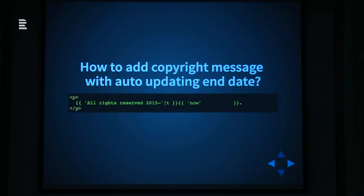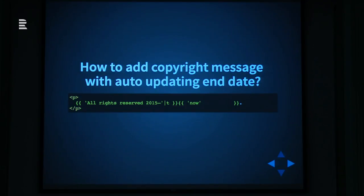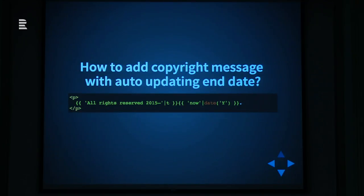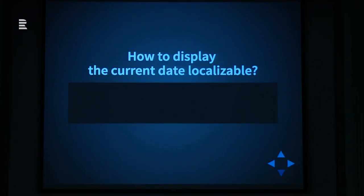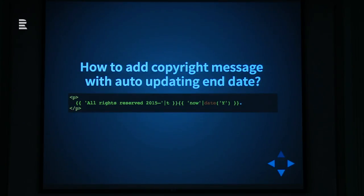So it should be auto-updated. First step: we use the 'now' keyword, which is understood by the strtotime() function of PHP. 'Now' means for PHP the current date and time. To be able to use it, we add another filter - the date filter - and we use the PHP date syntax with the year format character to display only the year from the current date and time. That's all. This is how we can create an auto-updating year in our page template. It's really easy.